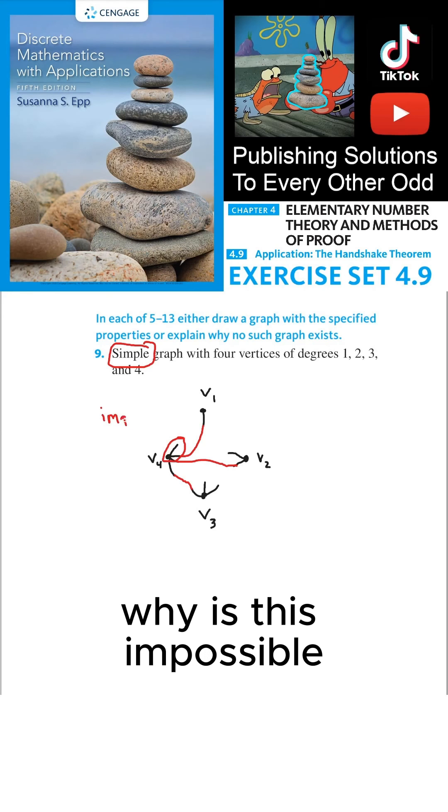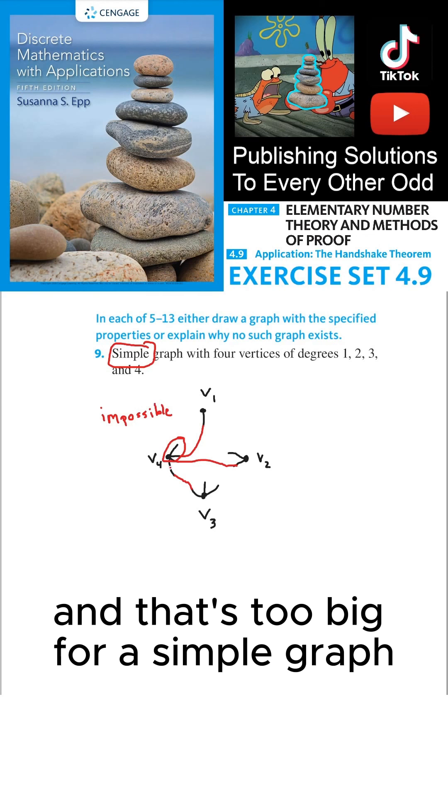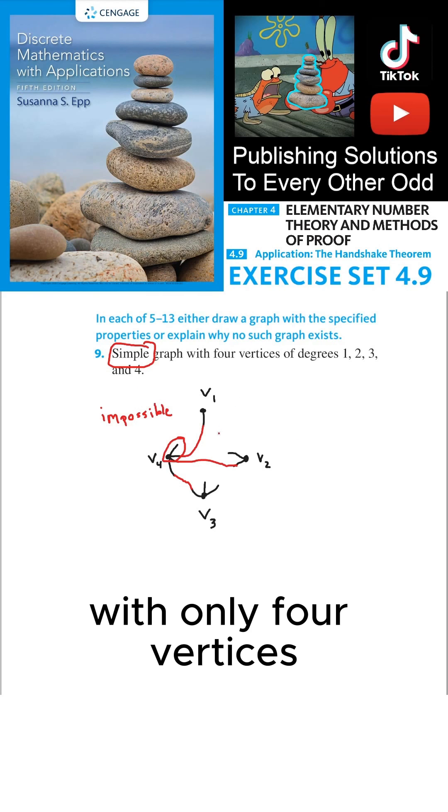And we have to ask, why is this impossible? It's because the degree of V4 is 4, and that's too big for a simple graph with only 4 vertices.